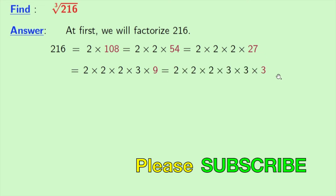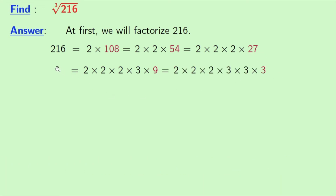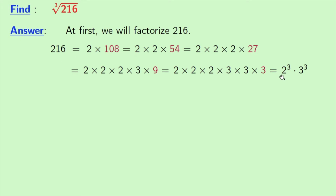So we get 27 equal to 3 times 9 and 9 is equal to 3 times 3. So we have 216 is equal to 2 times 2 times 2 times 3 times 3 times 3, which means 216 is equal to 2 power 3 times 3 power 3.